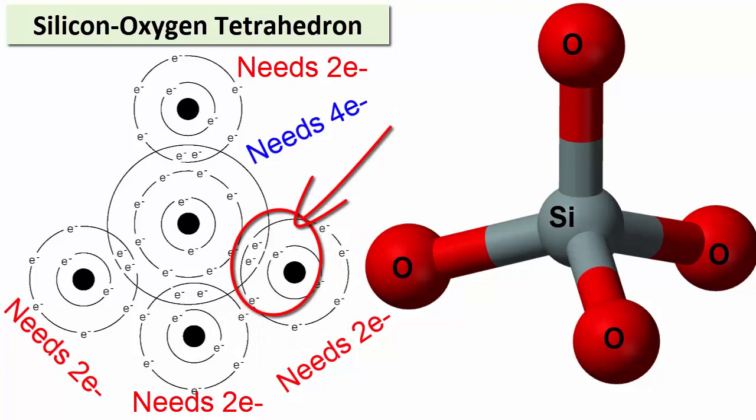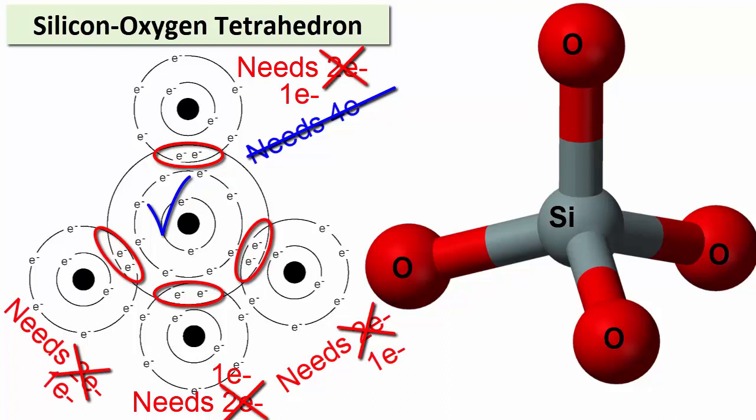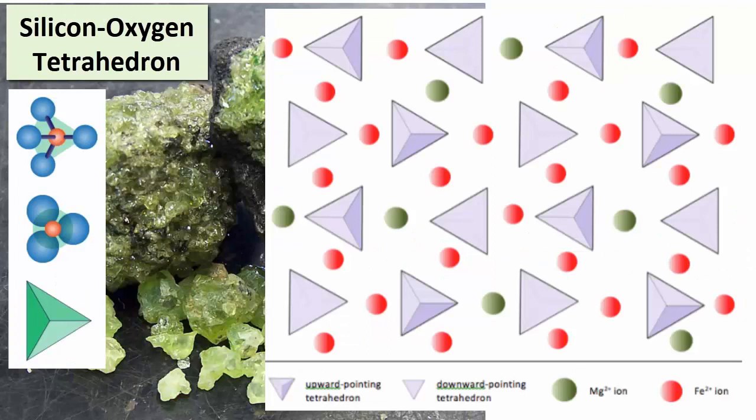Silicon and oxygen form covalent bonds in a tetrahedral arrangement. Silicon shares 1 of its electrons with each oxygen, and vice versa. As a result, silicon gets 4 extra electrons and becomes satisfied. The oxygens, however, are only partially satisfied. They are still looking for 1 more electron each. How these oxygens find their additional electron is what makes up the diversity within the silicate family of minerals.